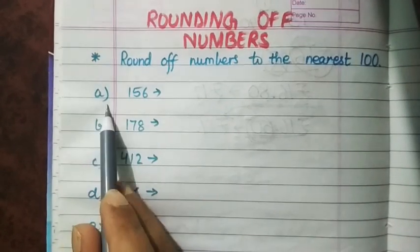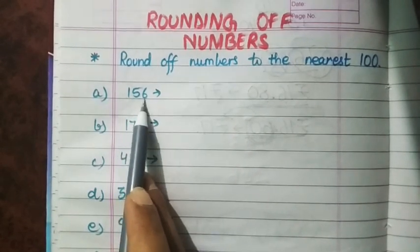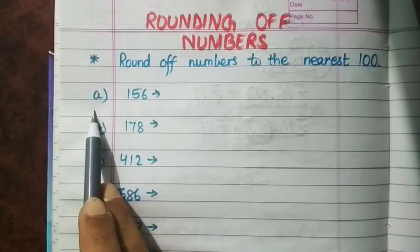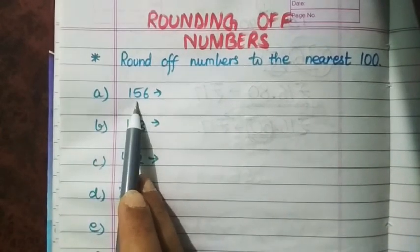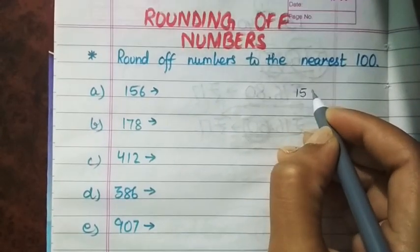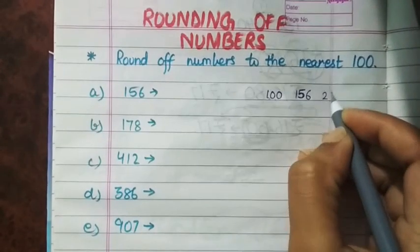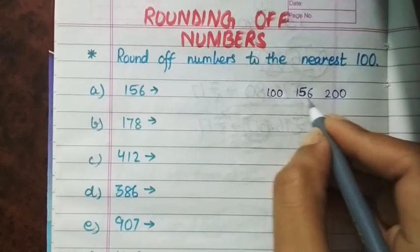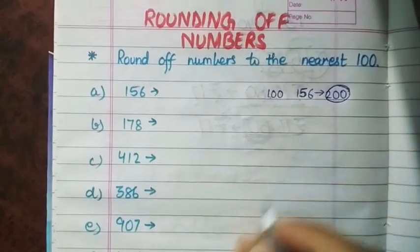So first we have the number 156. We have to see: is 156 closer to 100, closer to 200, or which 100 is it nearest to? Now children, 156 lies between 100 and 200. And 156 is closer to 200.